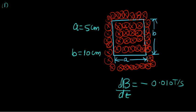So this is a rectangular conducting loop placed in a magnetic field that is directed into the page. With so many x's, it is pretty obvious that the magnetic field is directed into the page. We've been given the dimensions of the rectangle: A is 5 cm and B is 10 cm. And this magnetic field is decreasing at the rate of 0.010 tesla per second.